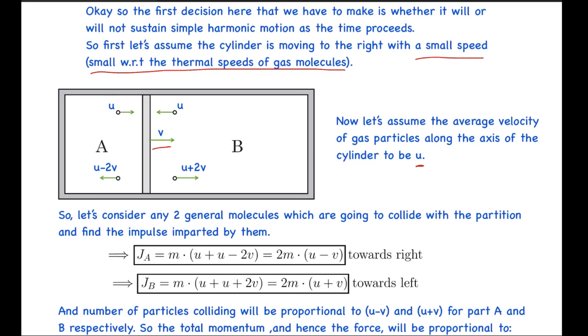We don't really care much about the average velocity in the other directions as it won't affect the collisions along the piston. So here we are considering only along the axis. Let's consider any two general molecules which are going to collide with the partition. After the collision, assuming elastic collision, the first particle will gain a velocity of U-2V in the opposite direction and the second particle will gain a velocity of U+2V in its opposite direction.